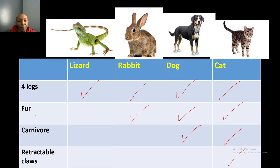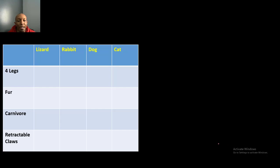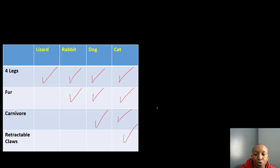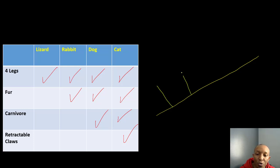Now we've filled out the characteristics that these organisms have on this chart. Let's move on to creating our own cladogram. I'll go ahead and fill this chart out right here so we can use it to make our cladogram. We'll draw a line going up representing our blank cladogram, and we're going to put our organisms on it.